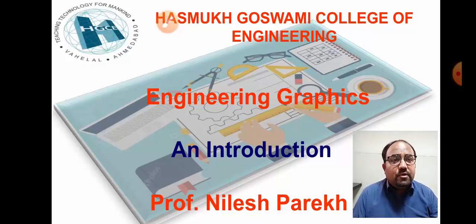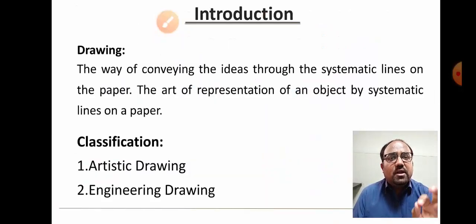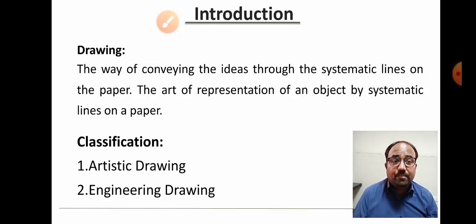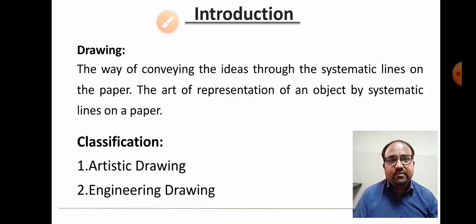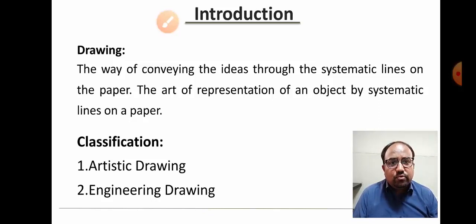What is engineering drawing? Drawing means the way of conveying ideas through systematic lines on paper — any type of graphical representation on paper with or without dimensions. It is called drawing. Generally, we classify drawing into two sections: the first is artistic drawing and the second is engineering drawing.